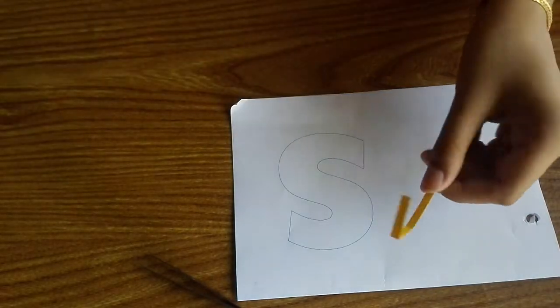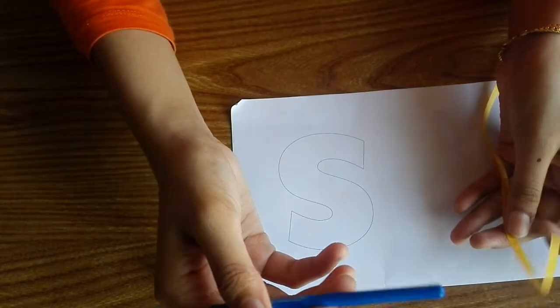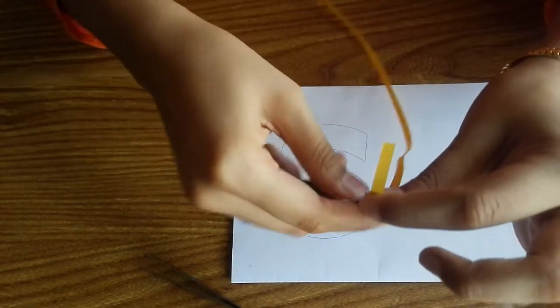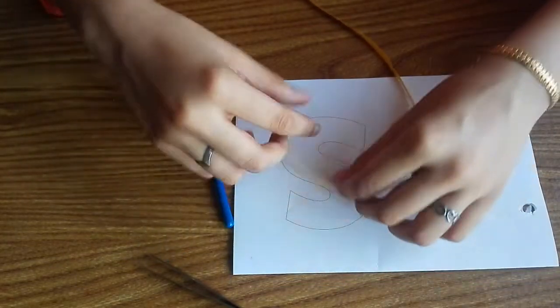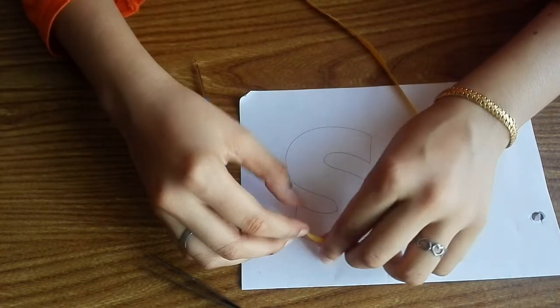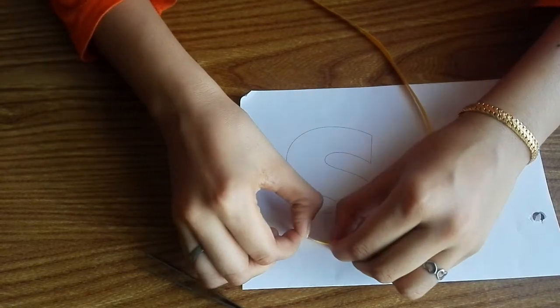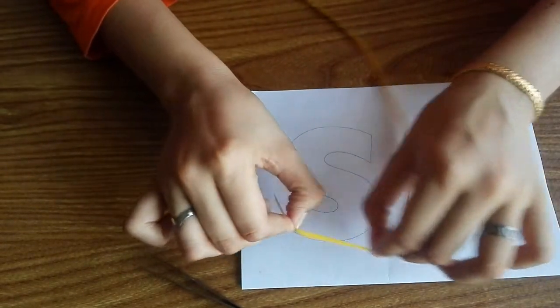Next will be to create the curve of the S. For that I am going to use the back side of a crochet hook. As it has a cylindrical surface, you can use anything like a pen or a pencil. When you get the curve that you need, you will go into the next side.